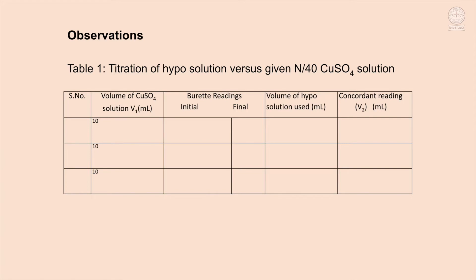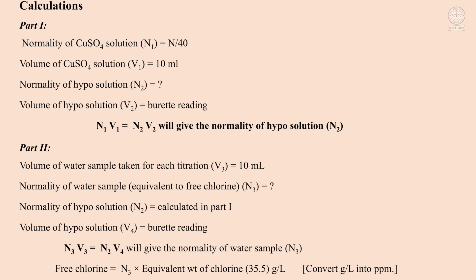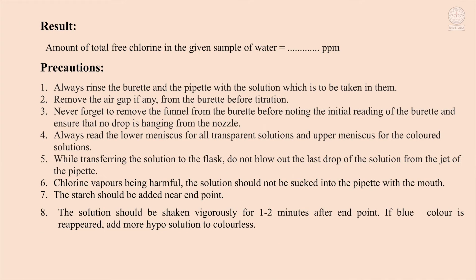Observations: Table 1 for titration of hypo solution versus given N/40 copper sulphate solution. Table 2 for titration of hypo solution versus given water sample. Calculations are based on the law of equivalence: N1V1 = N2V2. Result: The amount of total free chlorine in the given sample of water is recorded as ppm.